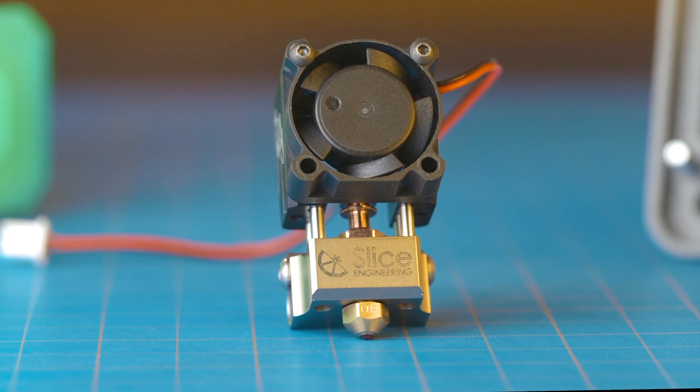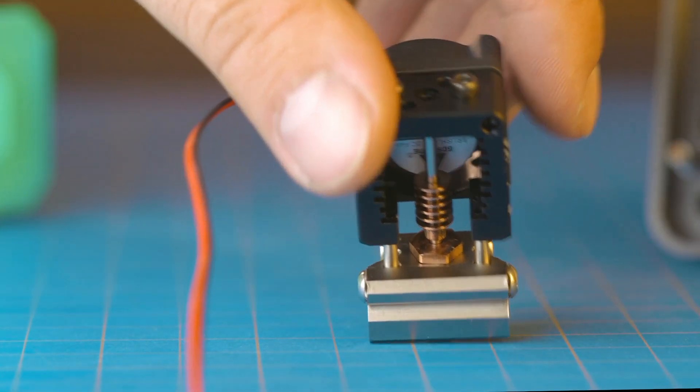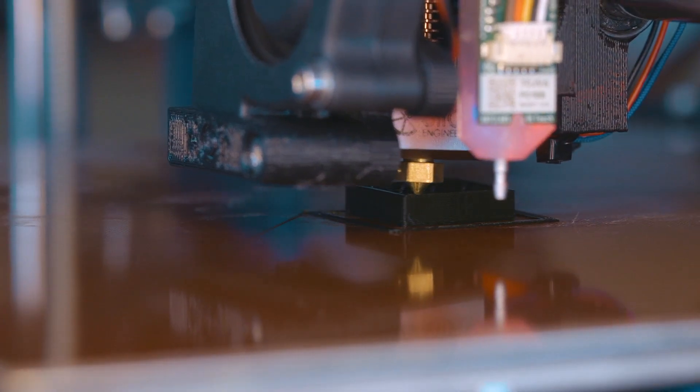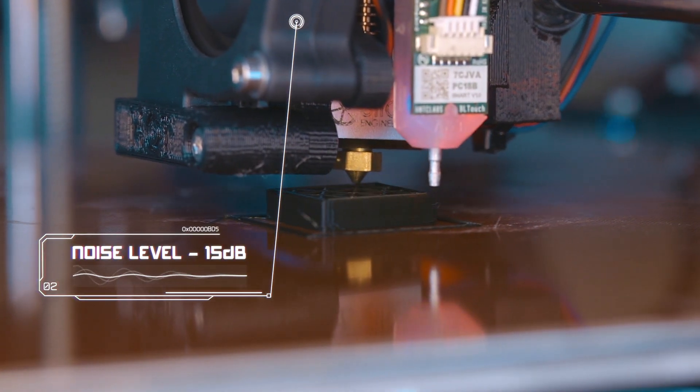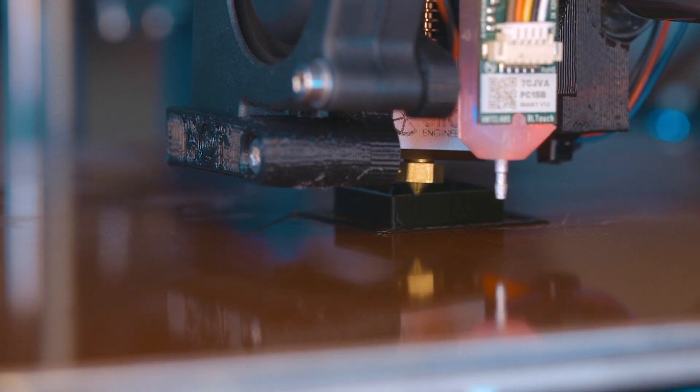The Mosquito comes with a tiny fan that perfectly mounts on the side and pushes just the right amount of air across the copper heat sink and away from the print area. Because it has so much less air to displace, it's much quieter than most hotends. This efficient design results in whisper quiet performance.